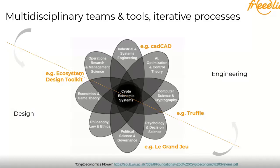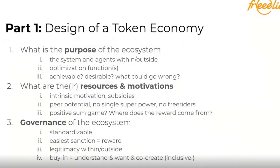Let's go into part one: the design of a token economy. Three big questions come up. First: what is the purpose of the ecosystem — who are the agents and stakeholders, what are the boundaries, and how do you keep the power balance? What do you want the system to do, what is the optimization function? When you have that, ask yourself at least once: is this even desirable? Because a lot of things can go wrong, and if they can, they will.